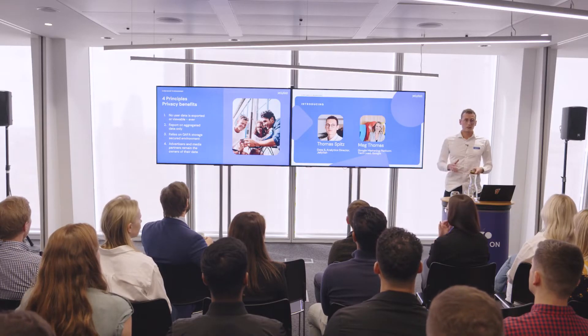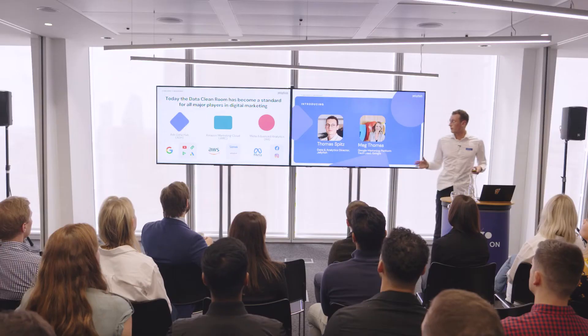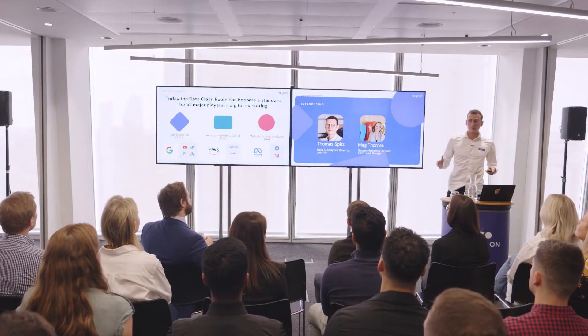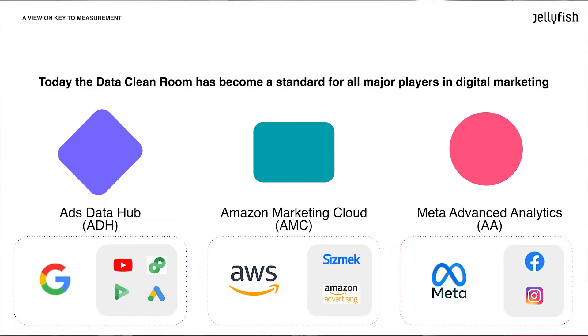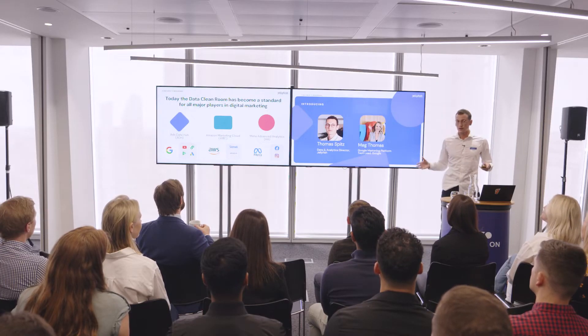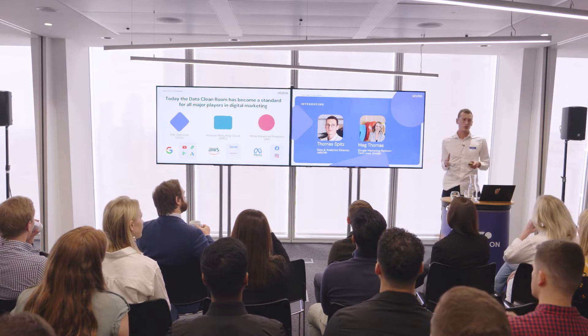This allows us to make granular analysis in a very privacy-safe environment. Today, data clean rooms are becoming a standard for all the major players in digital marketing. Google has AdsDataHub, which makes available all the data of Google — Google Analytics, DV360, YouTube. Amazon also has its own platform, Amazon Marketing Cloud. And Meta also has its own, which is Advanced Analytics. It's not replacing your own tools — we talked about Google Analytics 4 before, and it will not replace it. It's only a new tool where we can do other, more granular analysis.